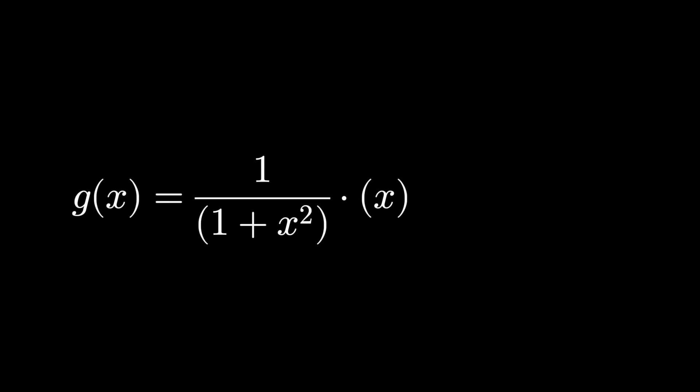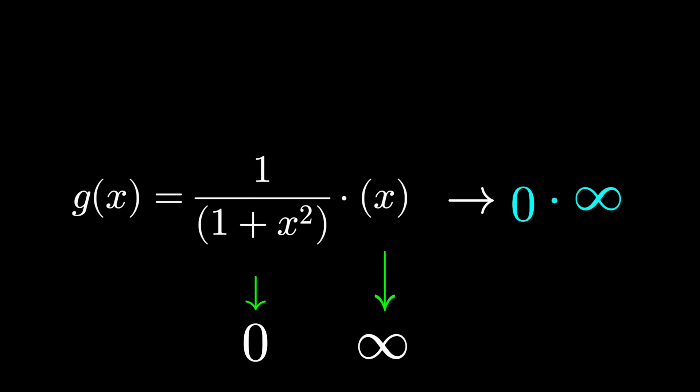What about a function written in a different way? For the same reasons, this function, as we plug in larger and larger values for x, approaches zero times infinity. One over one plus x squared gets smaller and smaller towards zero, x grows out towards infinity, and so this is still approaching zero times infinity. Yet looking at the graph of this function, as we plug in larger and larger values for x, it approaches zero.